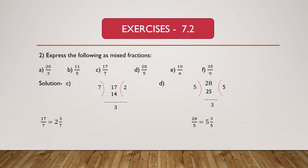Now we solve part C, which is given as 17 divided by 7. We have to express this as a mixed fraction. Here 17 is the dividend and 7 is the divisor. We know 7 multiplied by 2 is 14, and 17 minus 14 equals 3. We get 2 as the quotient and 3 as the remainder. So 17 divided by 7 equals 2 and 3/7.